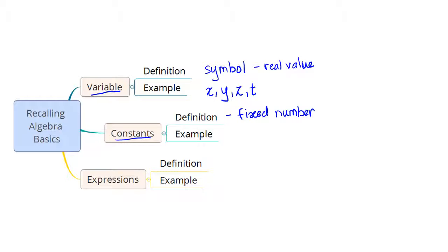To give you an example, if you take any number, let us say 7, 20, 100, these are all examples of constants. You know the meaning of 7 is a fixed number.